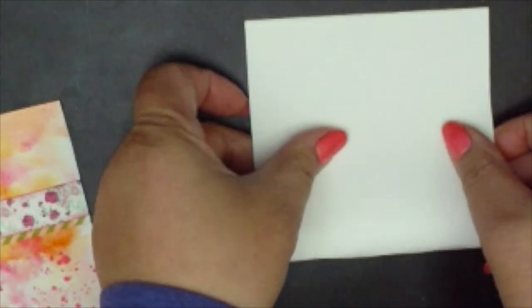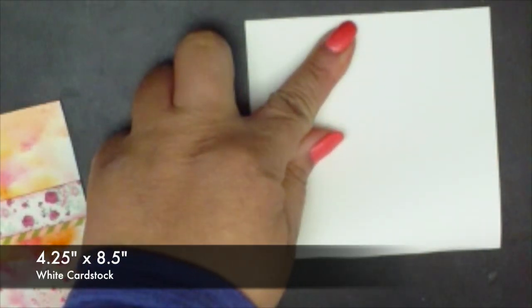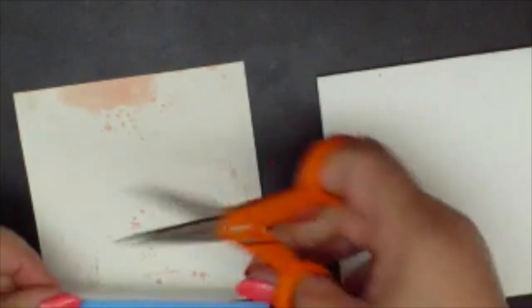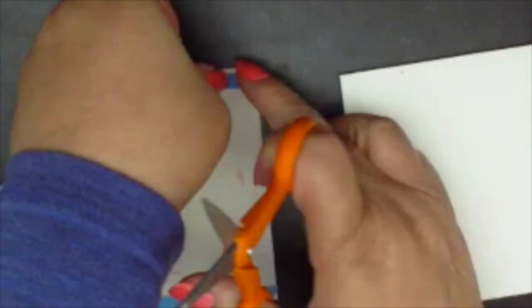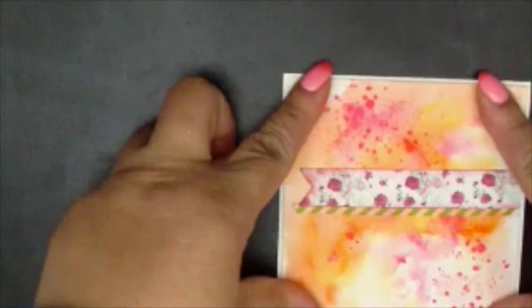Now let's put everything together. Fold a four and a quarter by eight and a half piece of white cardstock in half. And apply foam tape to the back of the watercolor paper. I think I'll add a little bit of foam tape in the center just for a little bit of strength. Right there. Pretty.